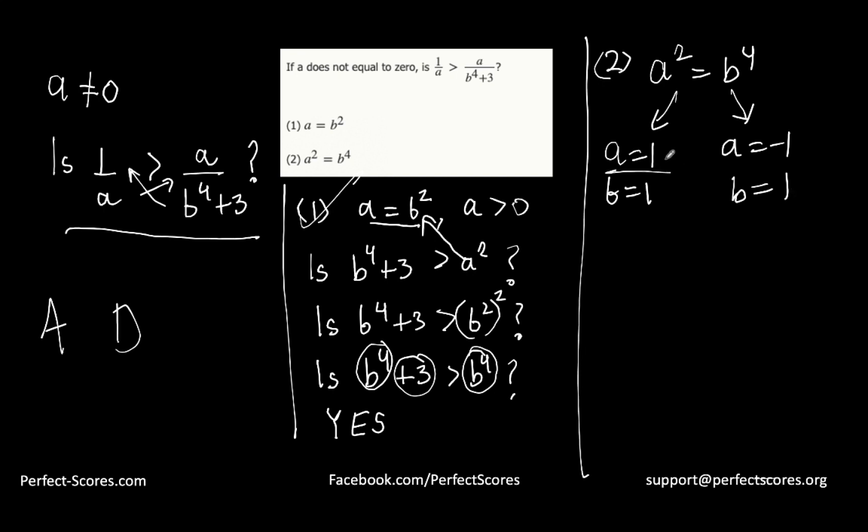If you substitute these numbers back into the question stem, is 1/a greater than a/(b^4 + 3)? And understand that b can be negative 1 as well. So a can be negative 1 and b can be 1. Basically, a and b can take any combination of 1 and negative 1.